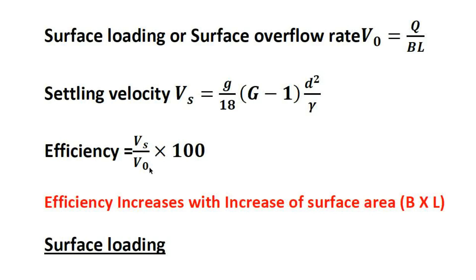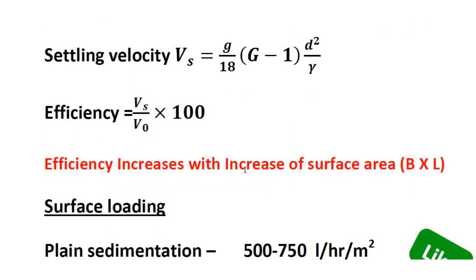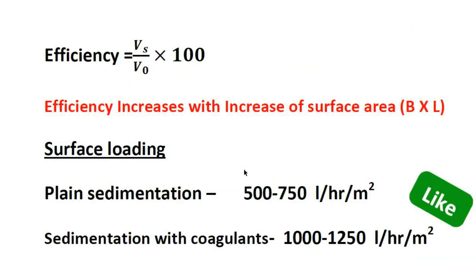The surface loading value Q/BL for a plain sedimentation tank is 500 to 750 litres per hour per metre square. For a sedimentation tank with coagulants, the surface loading is 1000 to 1250 litres per hour per metre square. These are most repeated questions.